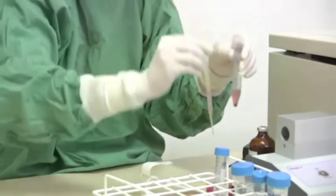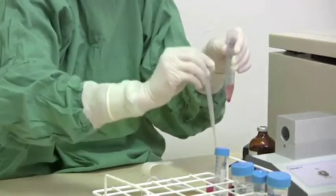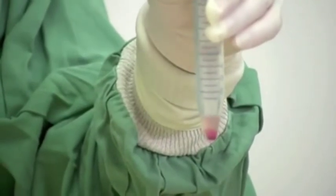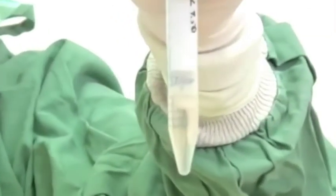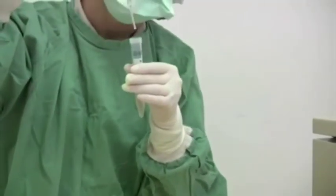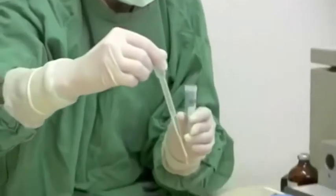Remove all the supernatant without disturbing the cell pellet, down to approximately 0.5 mils. Add the partially dissolved PRP fraction into the cell pellet using the same pipette. I bring it up to 2 mLs. I like the PRP. I like all the growth factors.